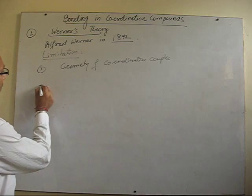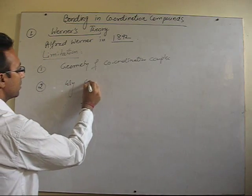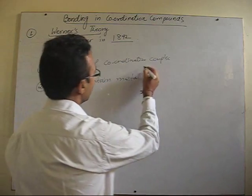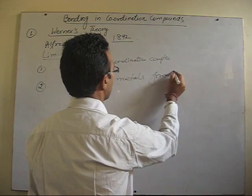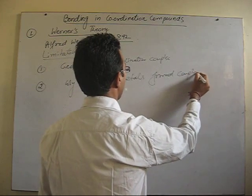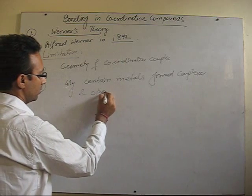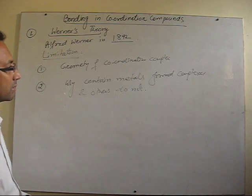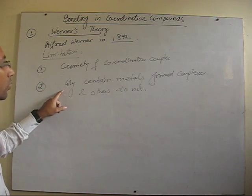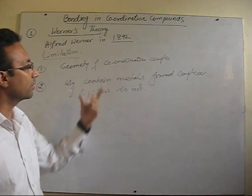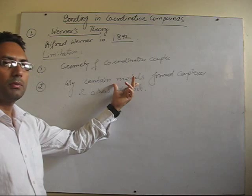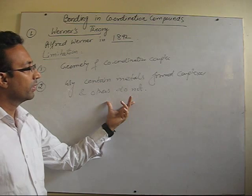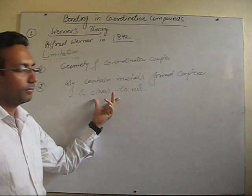The second limitation is: why do certain metals form complexes and others do not? This question is not answered by Werner's theory. He could only explain the structure of different compounds formed. There are certain elements which do not form complexes, like sodium, and Werner's theory could not explain why.